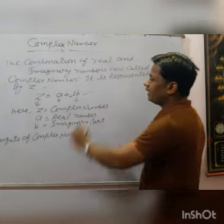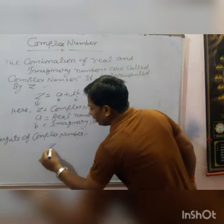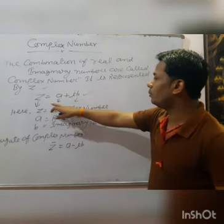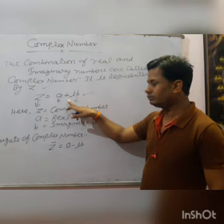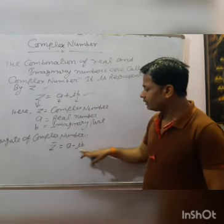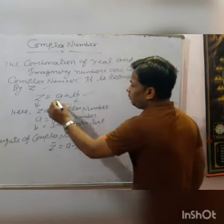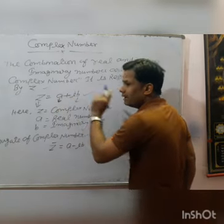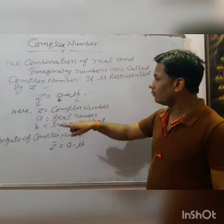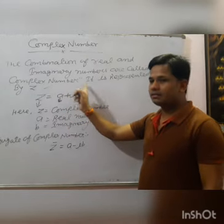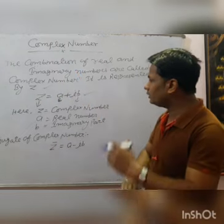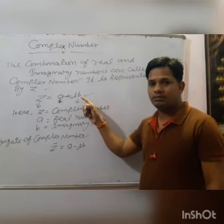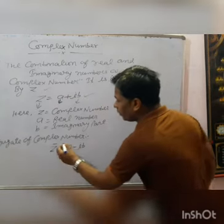Complex number kya hai? A plus iota B. Iska conjugate kya hoga? Conjugate of Z equal to A minus iota B. Yahan pe imaginary part ka sign reverse ho jaata hai — positive ka reverse negative, negative ka reverse positive. So conjugate mein imaginary number ka sign opposite ho jaata hai.